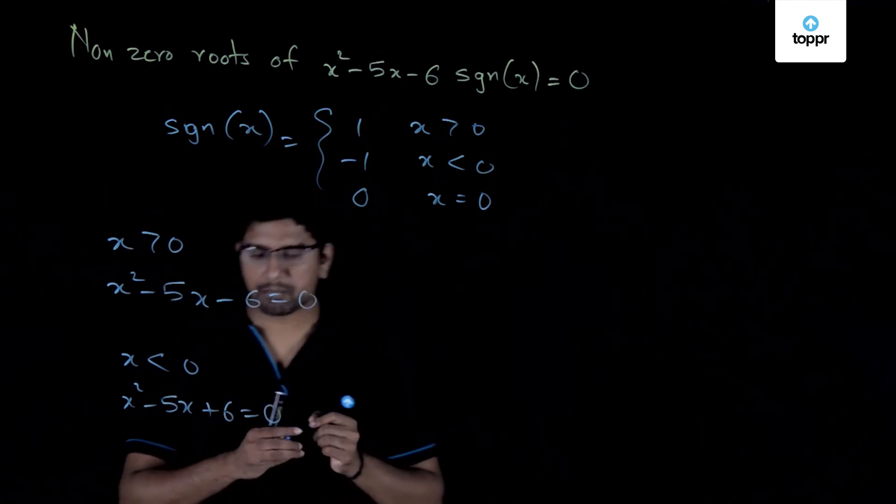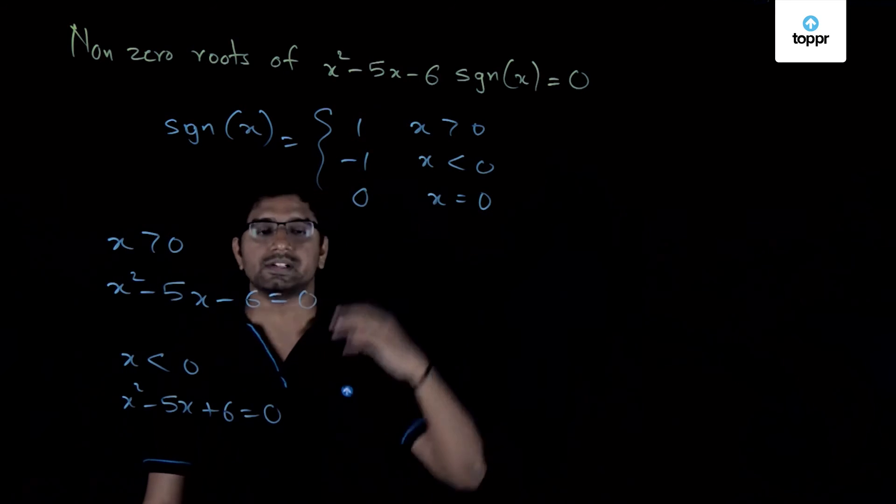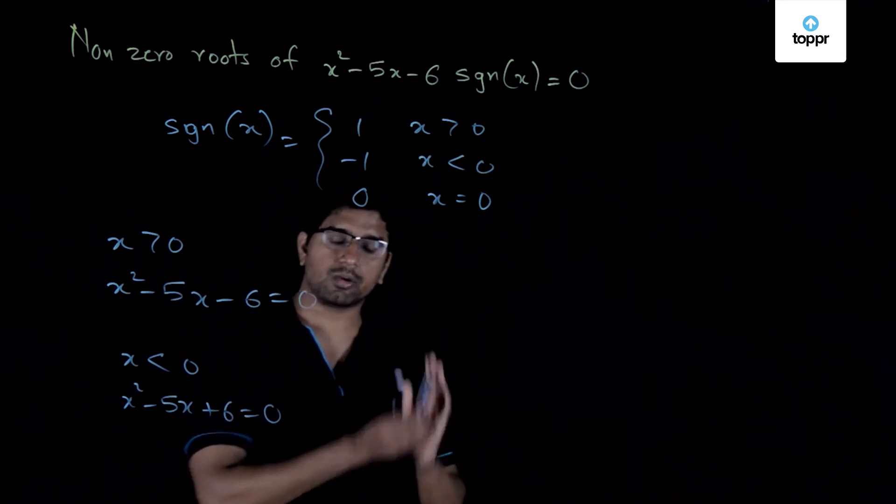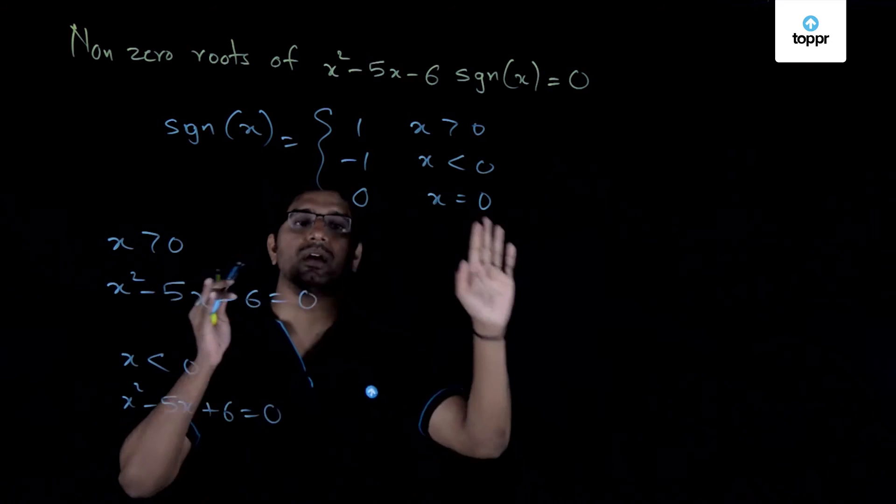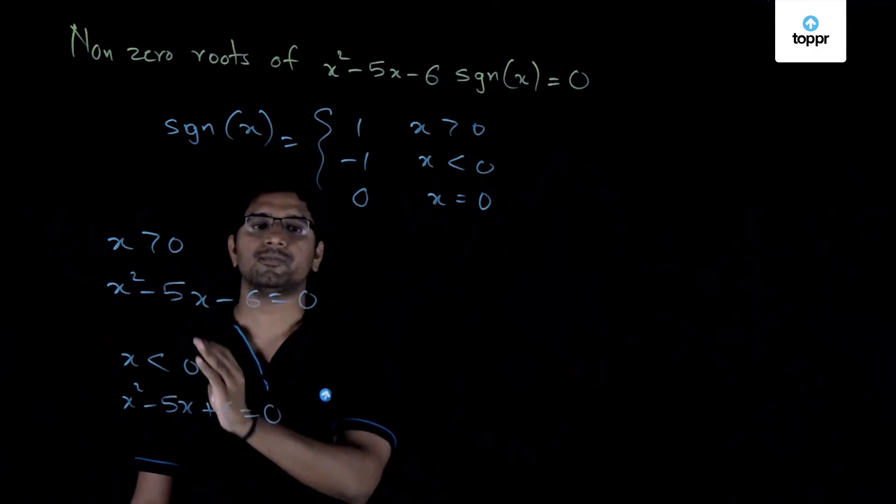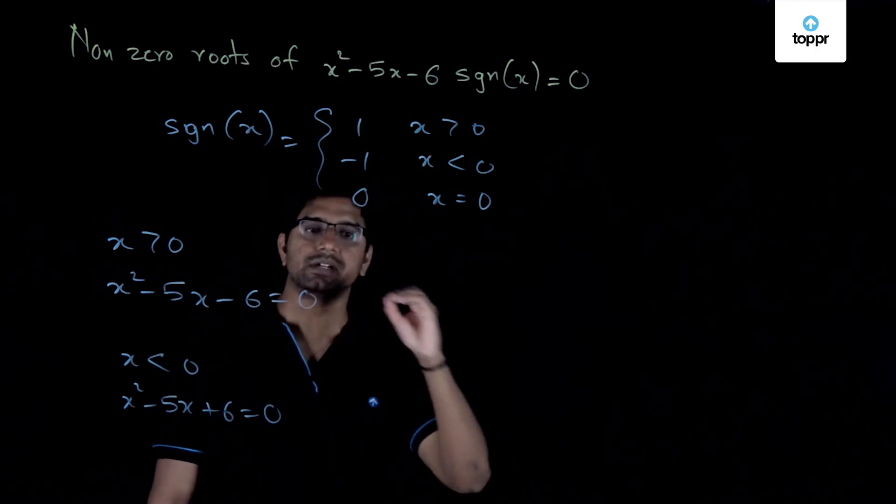So that is the important thing in any such problem wherein the coefficient term is given as another function itself. So first thing to be done is to write down the quadratic by getting rid of that particular function. That is you simplify the quadratic and try if possible to write it as a proper quadratic wherein the coefficients are constant terms.